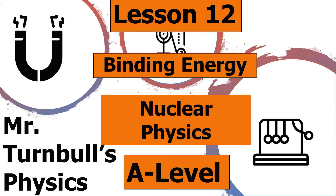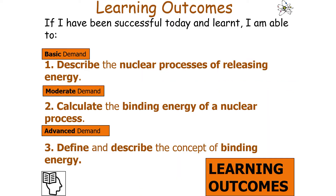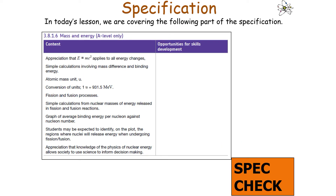Hello and welcome to this lesson on binding energy, which is part of the nuclear physics topic in AQA A-level physics. In today's lesson we're going to look at how you can describe binding energy. If we've been successful, we should be able to describe the nuclear processes of releasing energy, calculate the binding energy of a nuclear process, and define and describe the concept of binding energy. We're going to be looking at AQA A-level physics specification 3.8.1.6: mass and energy.